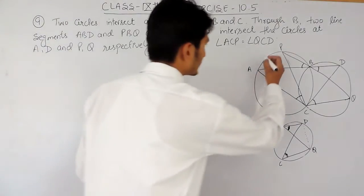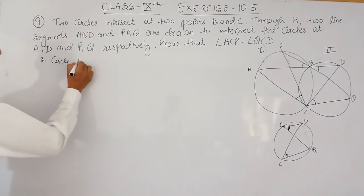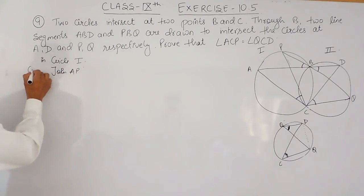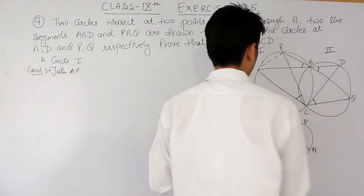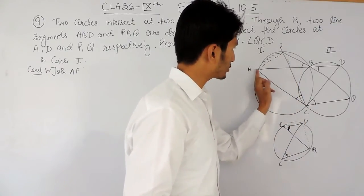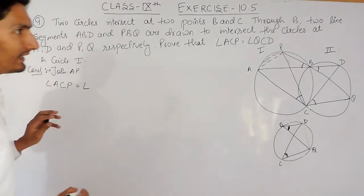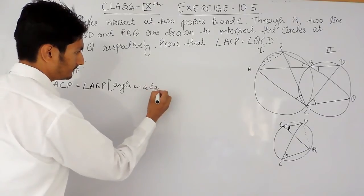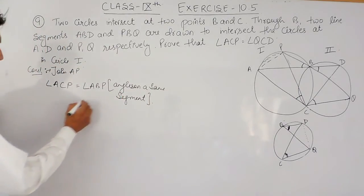In the first circle — consider this as the first circle and this as the second circle. In circle one, join AP. This is the construction. When you join AP, the circle is divided into two segments — a minor one and a major one. So angle ACP must be equal to angle ABP. The reason is angles on the same segment, and angles on the same segment are always equal. This is our first equation.